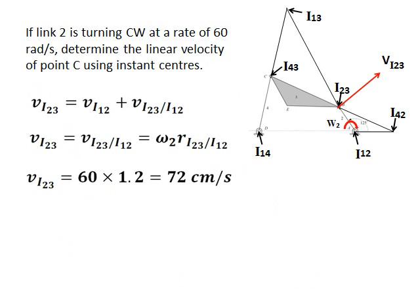If link 2 is turning clockwise at a rate of 60 radians a second, determine the linear velocity of point C using instant centers. We don't have to use all the instant centers to solve the problem. The only instant centers we need relate to the input and the output. The input is the angular velocity of link 2, and the output is the linear velocity of point C. It must be recognized that point C is on link 3, therefore the problem only involves link 2 and link 3. The relevant center is I23, which is the location where the velocity on link 2 equals the velocity on link 3.